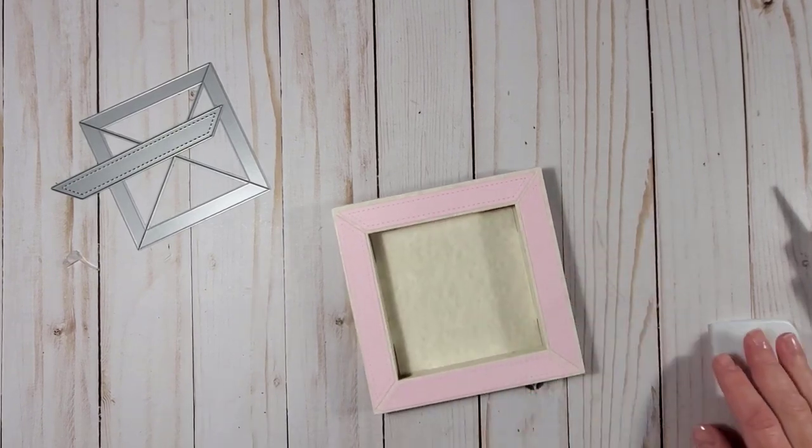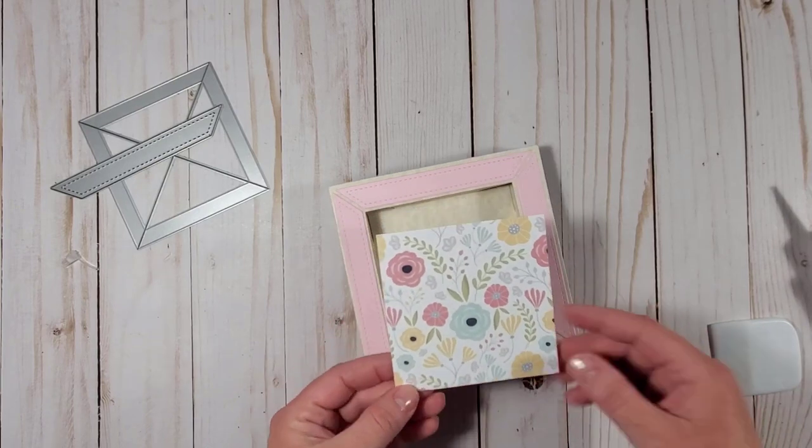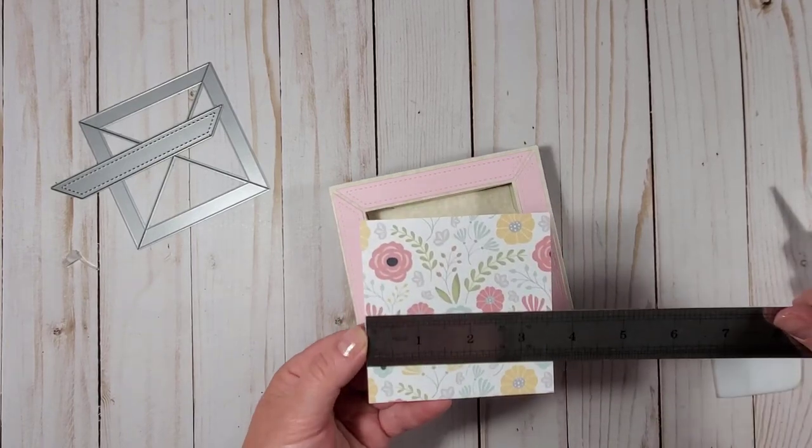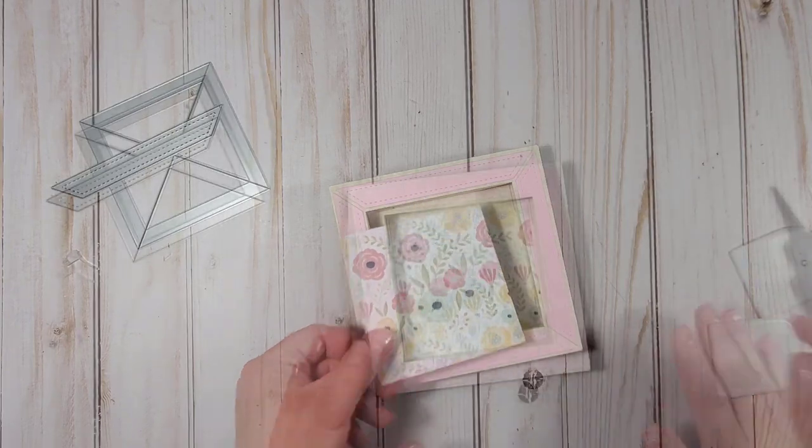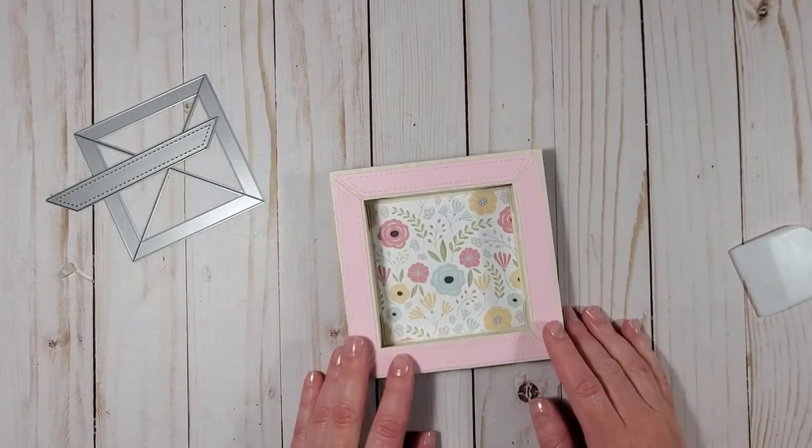To mat the inside of my shadow box I will prepare another piece of cardstock and this one measures three and five eighths by three and five eighths.